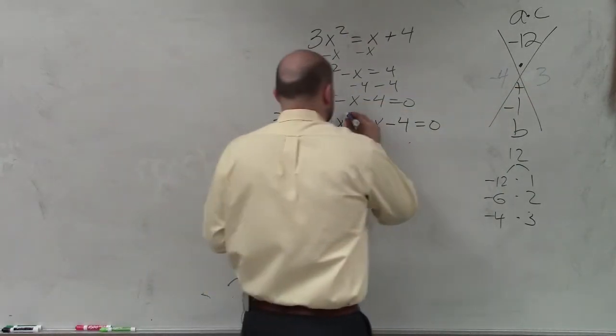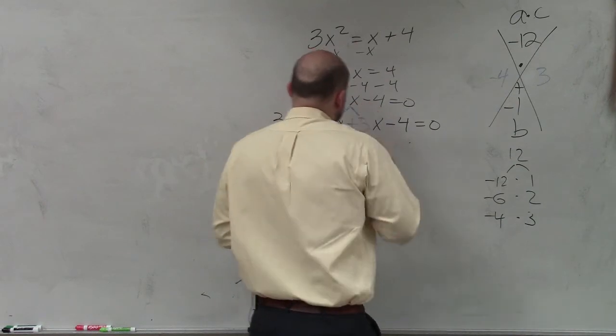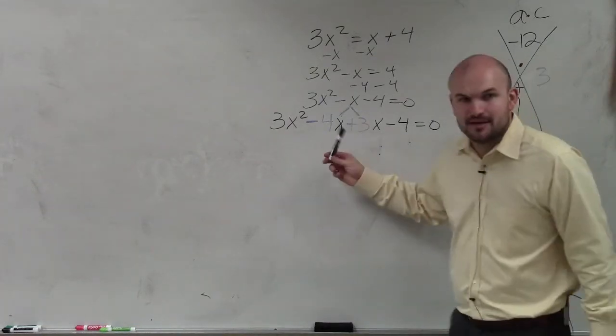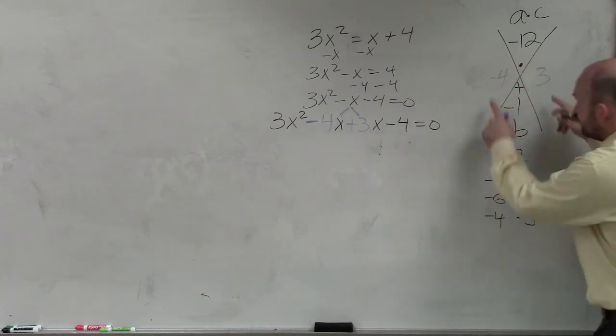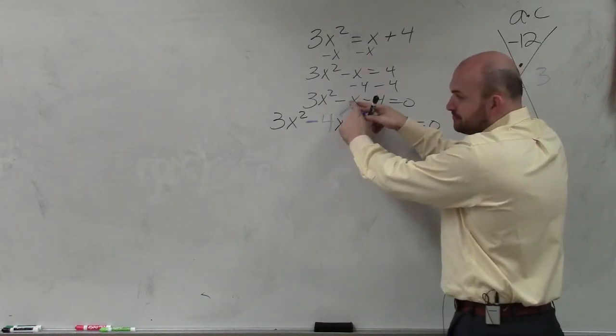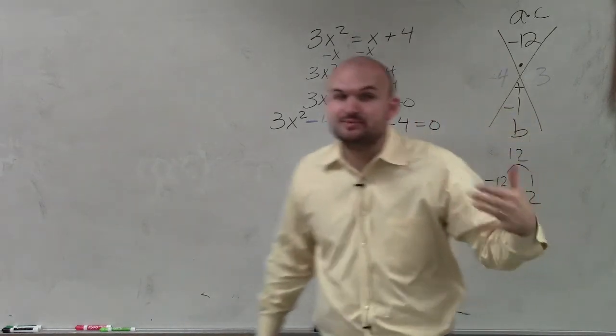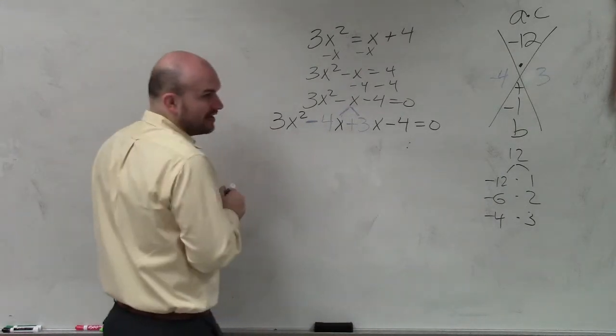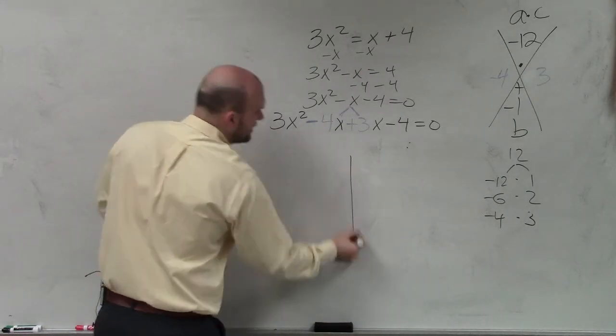Now, what I want you guys to see is look at negative 4x plus 3x. Do you guys see how that adds up to give us x? No. Yes. Or that adds to give us negative x. Basically, all I did was I took my two values. I gave them x's so that what I could do is I basically rewrote my problem. Now, there's two different ways we can solve it from here. The first way is to think of this as an area and to create a box.